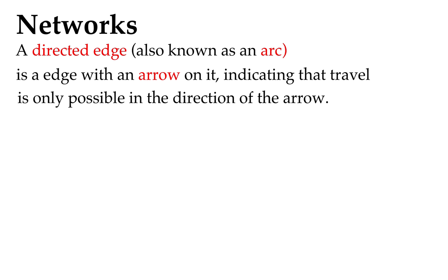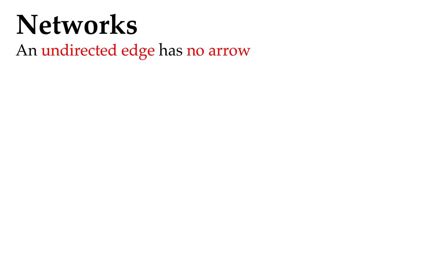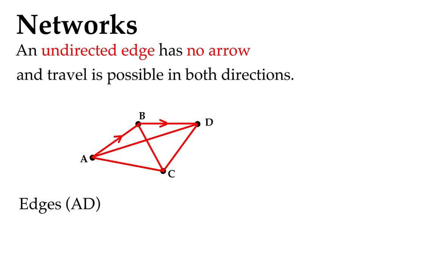So you've got two types: you've got a directed edge with arrows on them, also known as an arc, and it indicates that travel is only possible in the direction of the arrow. So you've got A, B and B, D having arrows there, so they're called directed edges. And of course you've got undirected edges without any arrows, so travel is possible in both directions. You've got A, D, A, C, B, C and C, D as examples of undirected edges.